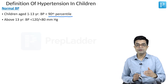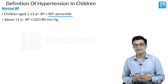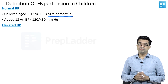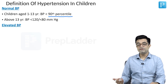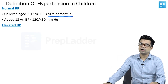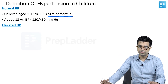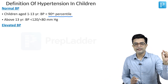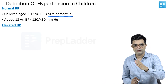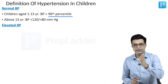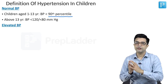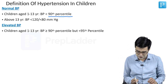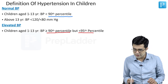For an older person, if the systolic BP is less than 120 and diastolic BP is less than 80, we call it normal BP. What is elevated BP? The term elevated BP was previously called prehypertension in the older classification. The word prehypertension has now been removed; the term to be used is elevated BP. Anything less than the 90th percentile is normal; 90th to 95th is elevated BP.